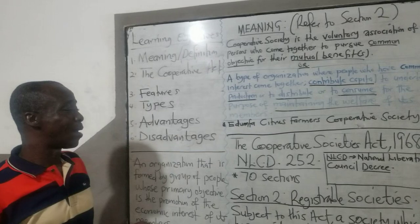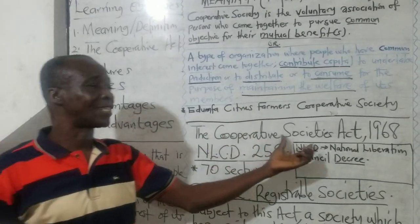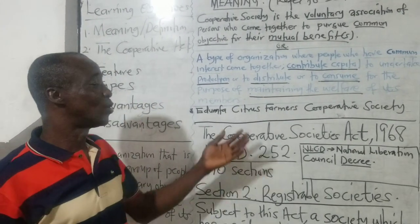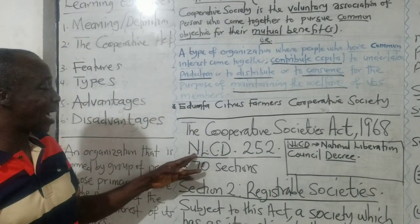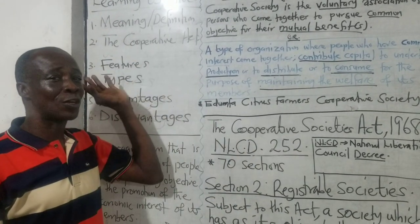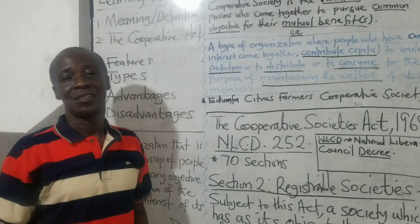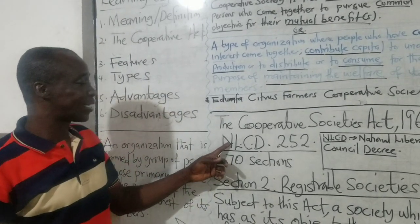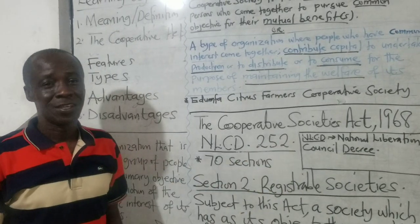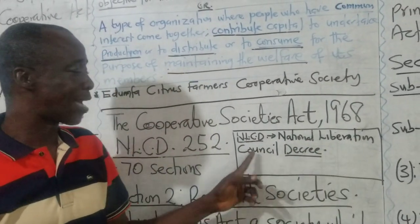You remember I told you about the Cooperative Act. This is the Cooperative Societies Act 1968, which tells us the year it was enacted. And here they have written NLCD 252. The previous ones we learned had Act 151 or Act 992, but here they wrote NLCD 252. NLCD stands for National Liberation Council Decree.